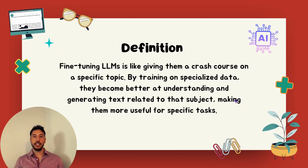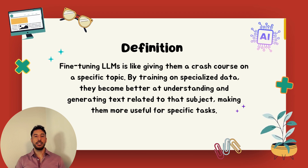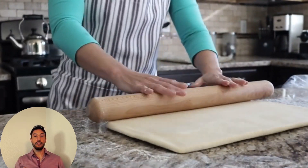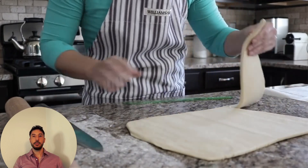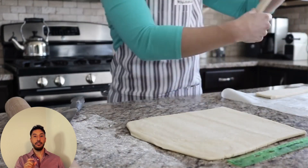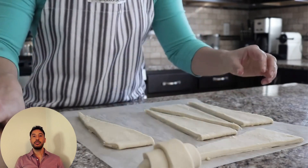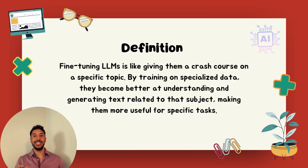Fine-tuning is basically specializing in a specific aspect of the language. After months of broad learning, you decide you want to use your French for a specific purpose — say, discussing French cuisine for a blog or to work in a French restaurant. To fine-tune your French, you'd read French cookbooks, watch cooking shows in French, and practice speaking about cooking. Similarly, in the fine-tuning phase for a large language model, the model is trained on a specific dataset relevant to the tasks or domain it needs to perform well in.